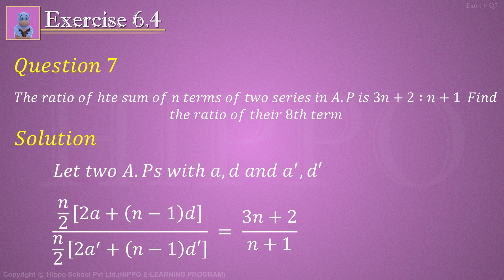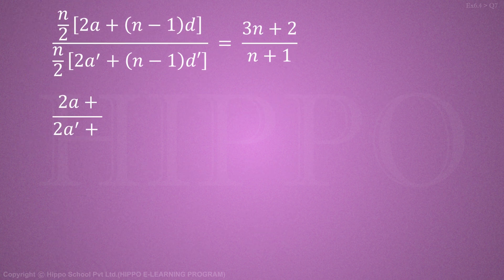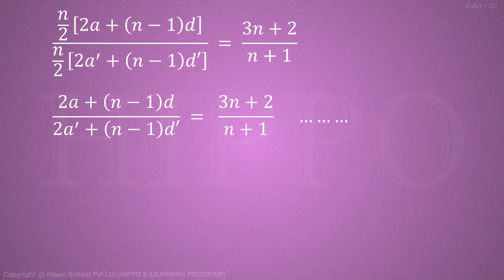Which implies: [2a + (n−1)d] / [2a' + (n−1)d'] = (3n + 2) / (n + 1). क्योंकि ऊपर वाला n/2 नीचे वाले n/2 से cancel हो गया. इसको equation number 1 का नाम दे दें.